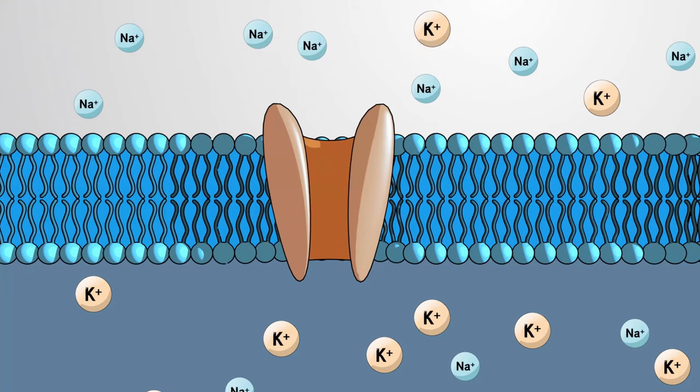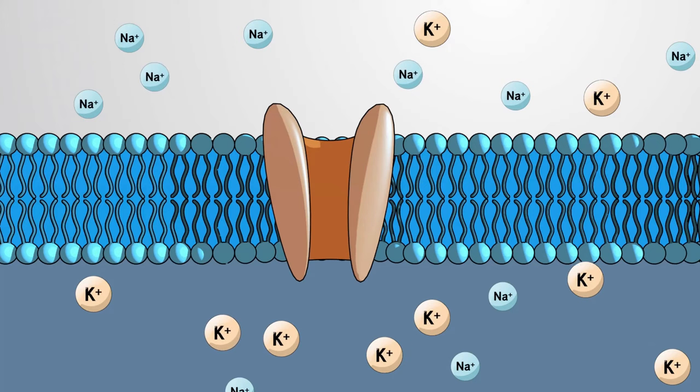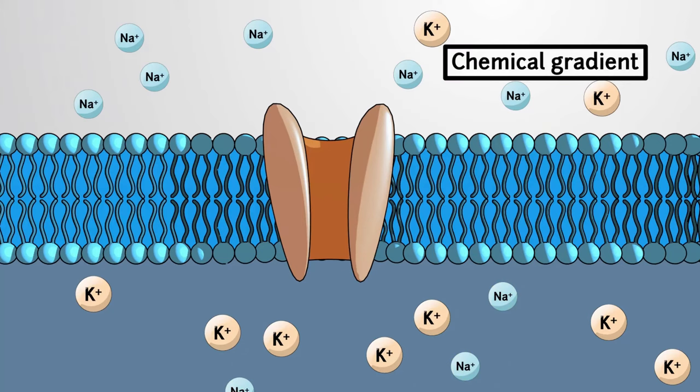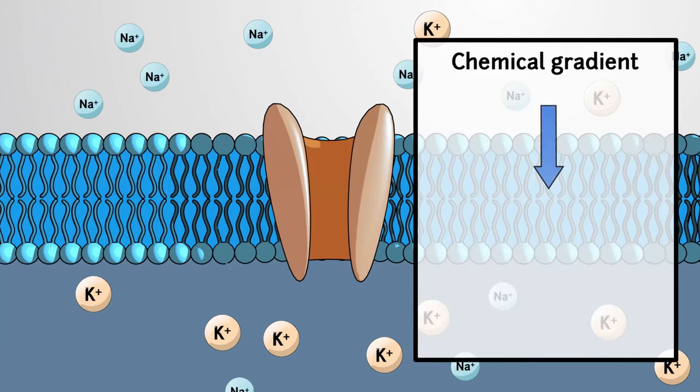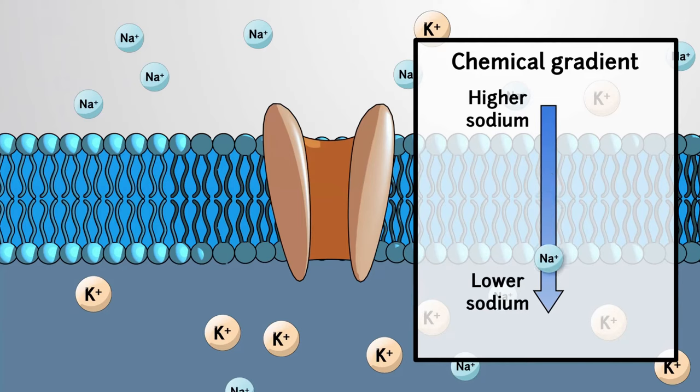Ions that are critical for cell function, including sodium and potassium, are unable to diffuse across the membrane, relying instead on movement by channels and transporters. Under normal conditions, there is generally more sodium on the outside of a cell than inside. This creates a chemical or concentration gradient, where sodium would flow across the cell membrane from outside to inside if it were given a path.